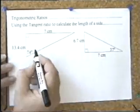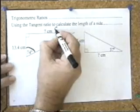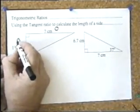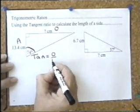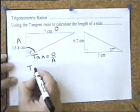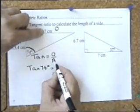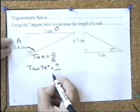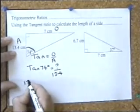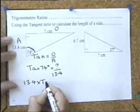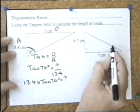With this triangle I'm working with this angle. If I'm working with that angle, that's called the opposite, and this is next to it — called the adjacent. So the trig ratio I'm going to use is tangent: opposite over adjacent. The tangent of 74 degrees equals the opposite, which is the unknown, over the adjacent, which is 13.4 centimetres. If the unknown is on top, you multiply the two pieces of information to get the unknown.